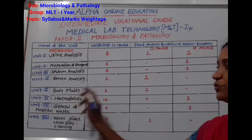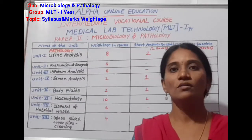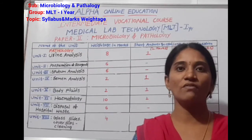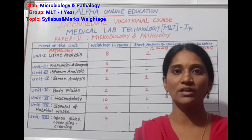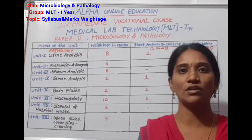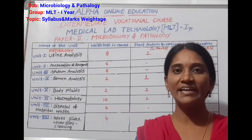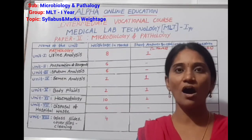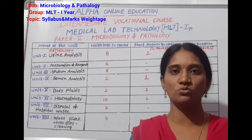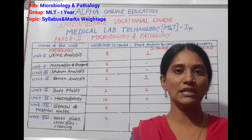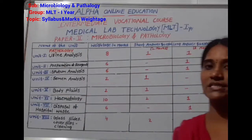Next, body fluids — fluids found in the body such as peritoneal fluid, pericardial fluid, and CSF, which is cerebrospinal fluid. These fluids are found around the brain, heart, lungs, and other parts of the body.